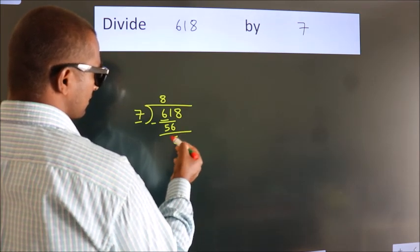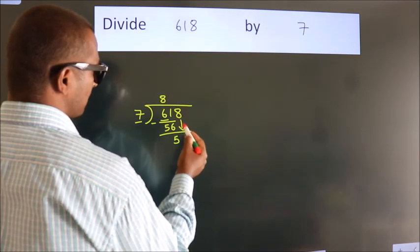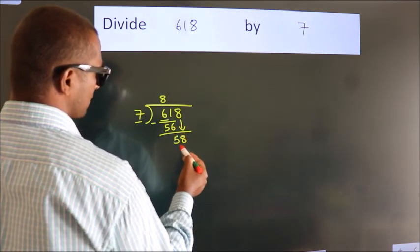After this, bring down the beside number. So 8 down. So 58.